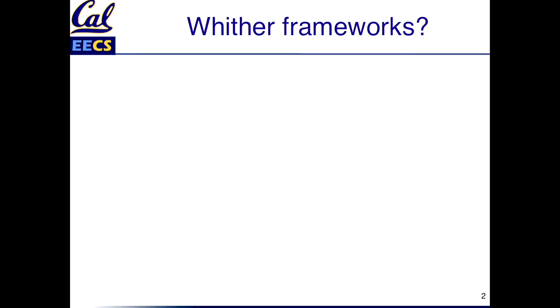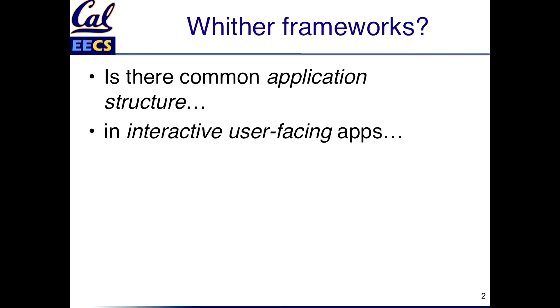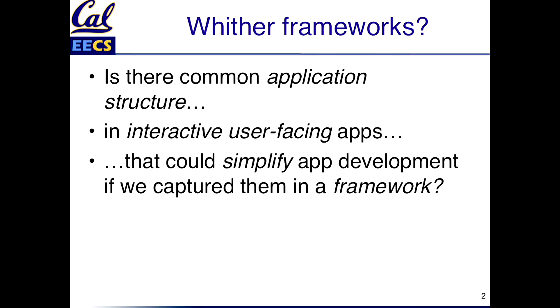Since we're trying to motivate all of this material with a question of why would you care to learn about this stuff, the question for this segment is: we've been talking about frameworks and the fact that they allow you to capture some of the commonality in different kinds of apps. Specifically for the SaaS apps we're building in this course, what is the common application structure in these interactive and user-facing apps that, if we could capture it in a framework, would simplify app development?